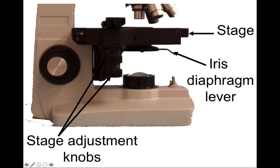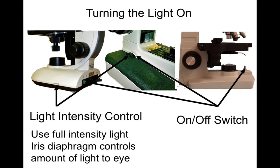We have our light source, and there's an on switch to turn the light on. However, the amount of light coming from the light source is very important for getting the best picture, and that is why we use the iris diaphragm lever. The iris diaphragm lever adjusts how much light is able to pass through the stage and through the microscope slide. You will find the iris diaphragm lever just below the stage. The second way to regulate the amount of light is with the intensity control — every microscope will have some way to control the amount of light emitted from the light source.